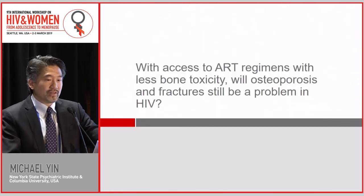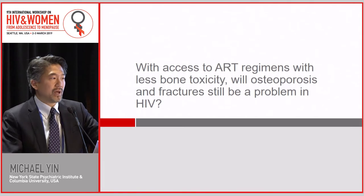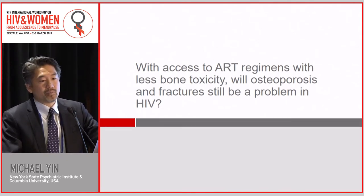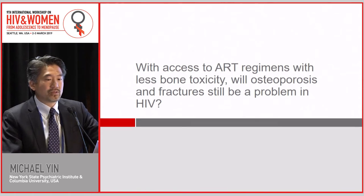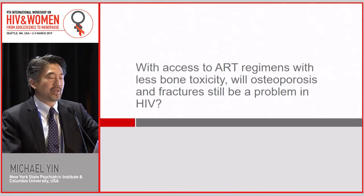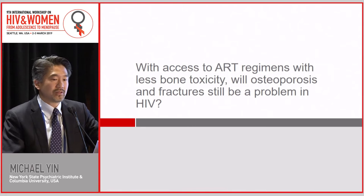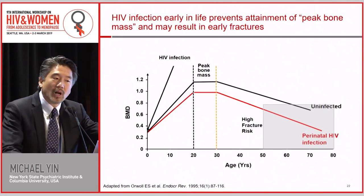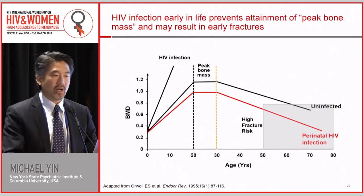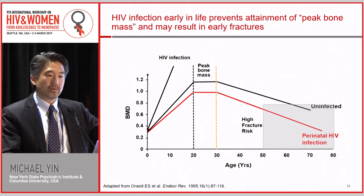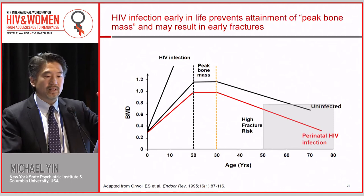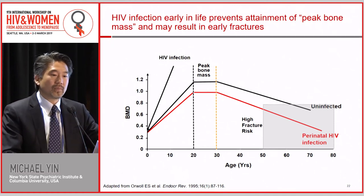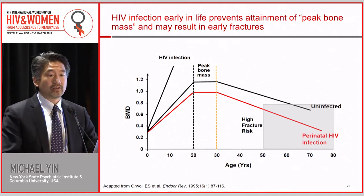This begs the question: now that we know which antiretrovirals are more toxic to bone, when we switch everybody to these regimens, will osteoporosis and fractures still be a problem for HIV patients? For many adults this will probably be less of a problem, and we'll likely see the fracture incidence decrease and the difference between HIV-positive and negatives decrease over time in the United States.